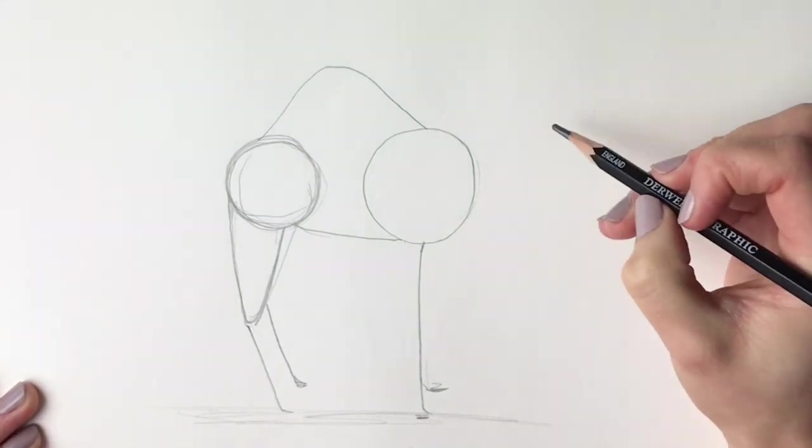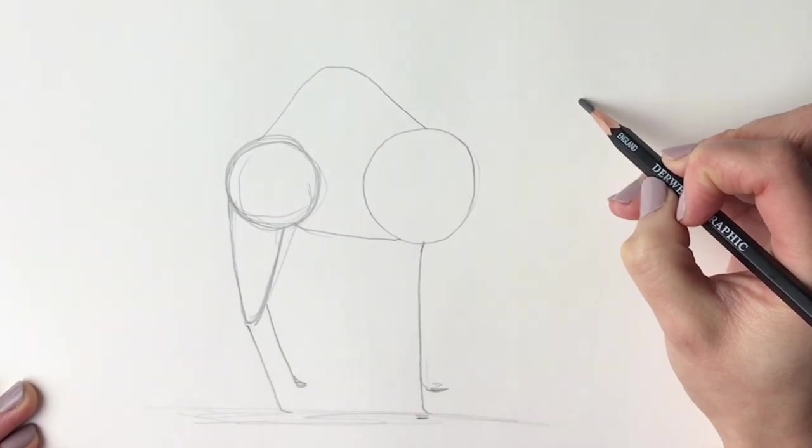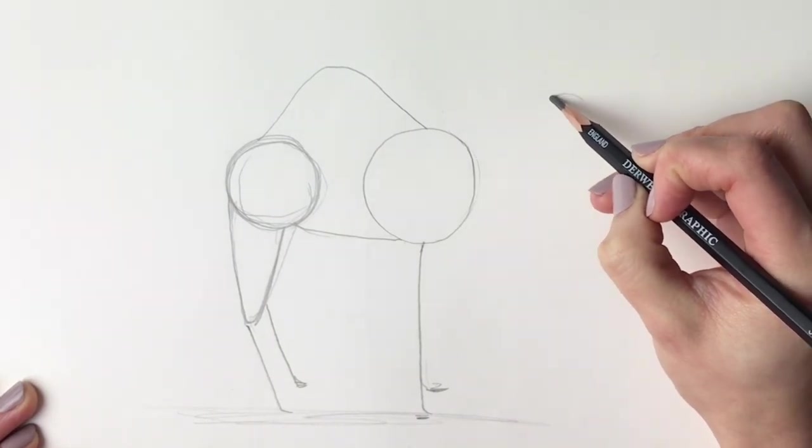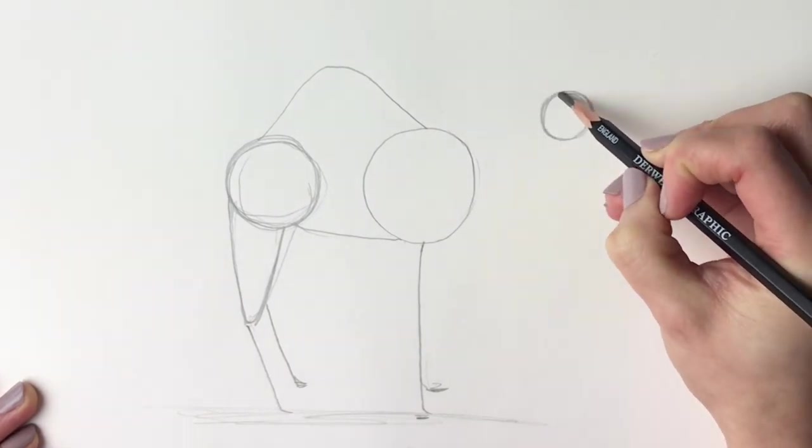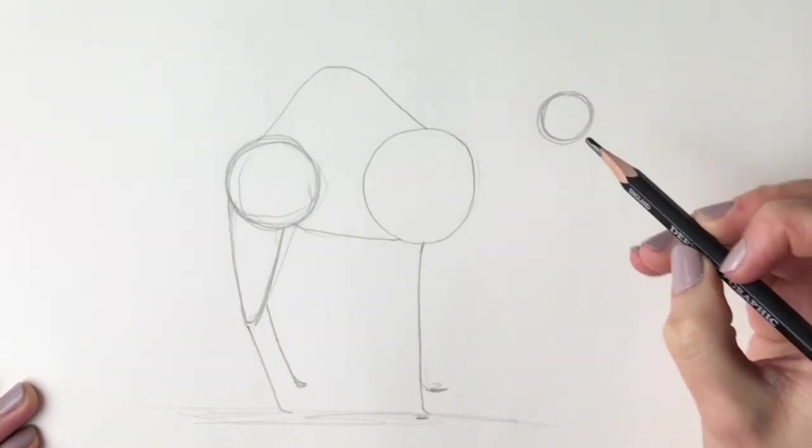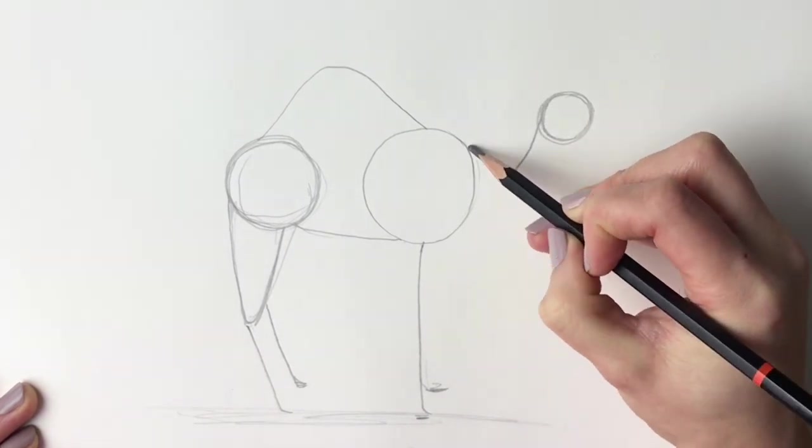So next we're going to be doing the head. Now we're going to draw another circle, so just about here. Now this is a much smaller circle than all the others. I'm going to join up this circle to here.